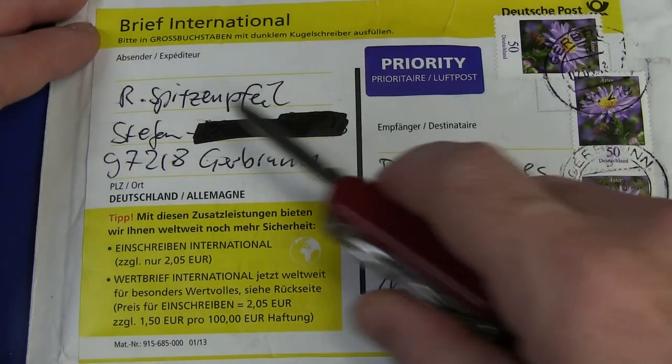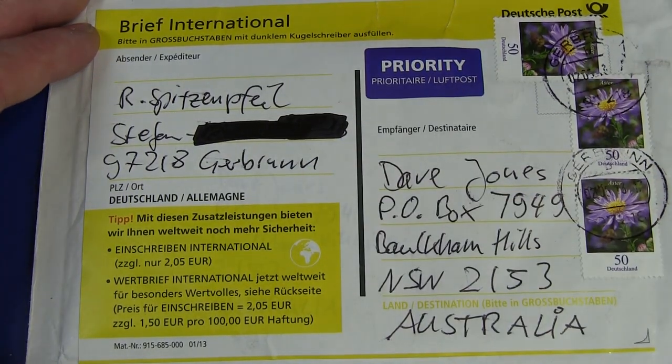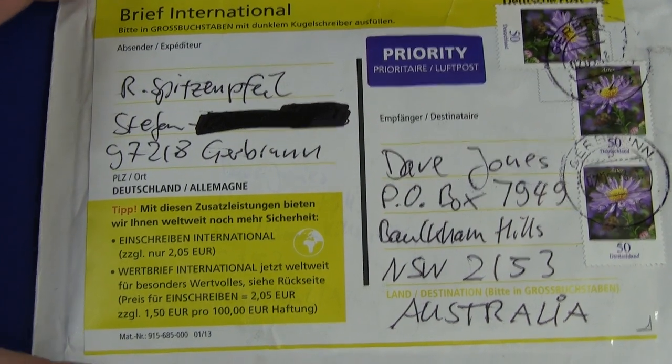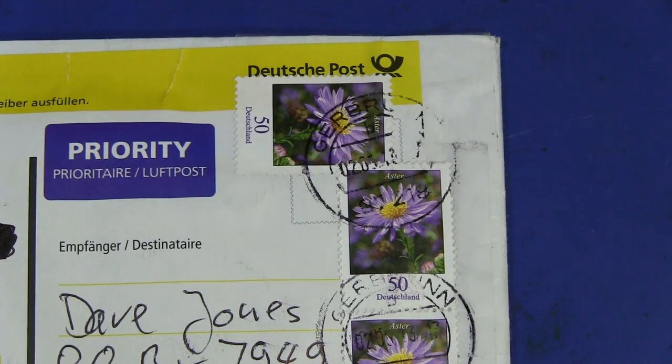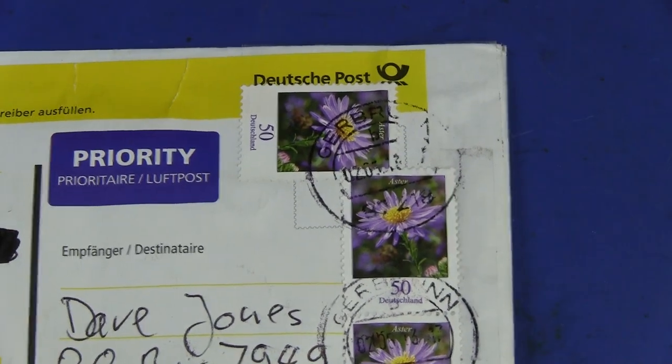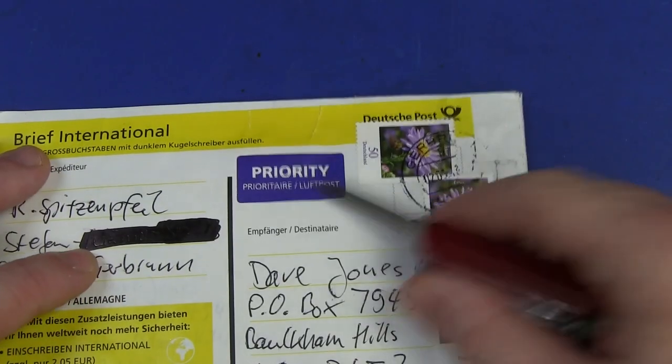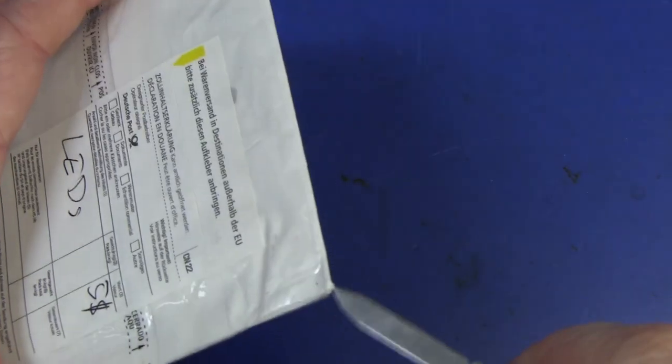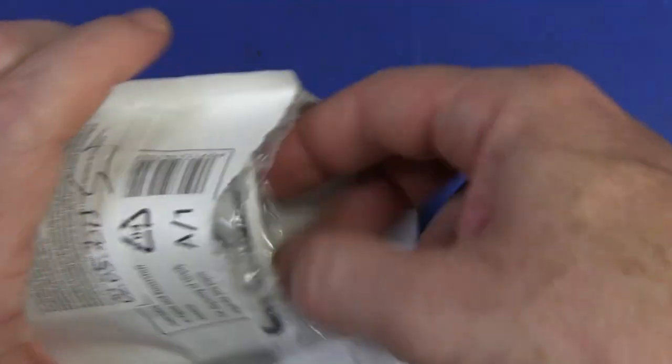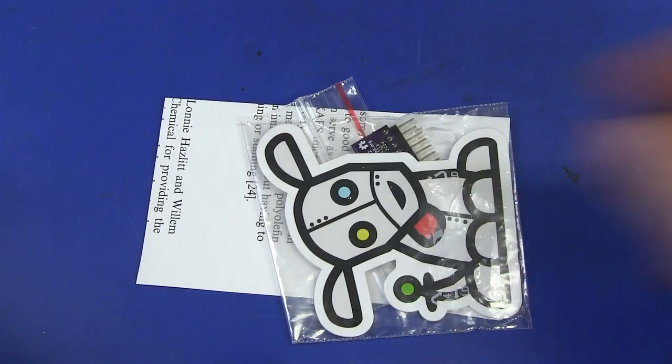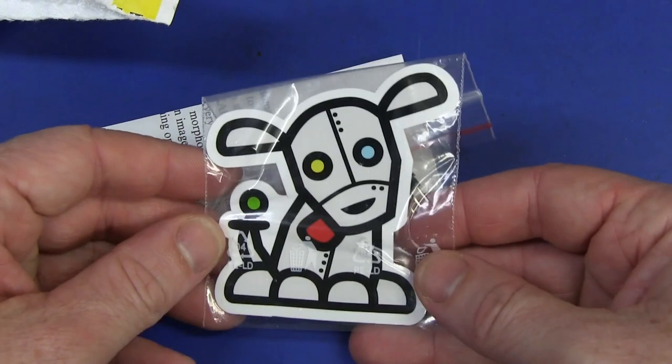Next up is R. Spitzenfelt. That kind of rings a bell. I think I may have had one. It's Stefan, is it? I don't know. They may have it back to front. Anyway, from Germany. Hi to all my German viewers. There's heaps of them. Deusch Post. Love Germany. Been there. Lovely flowers. That's great. Priority. Yeah, there's probably no point sending priority when it takes me forever to open these things. Sorry about that, folks. I just don't get around to doing the mailbag. I should, but you know, by the time like, hey, that's cool. Robot dog. Awesome.